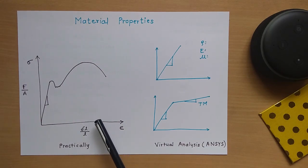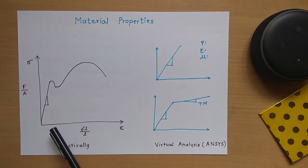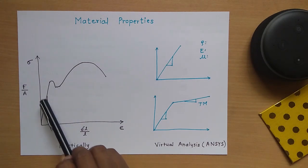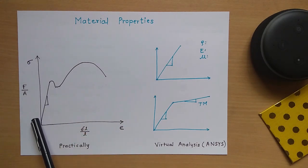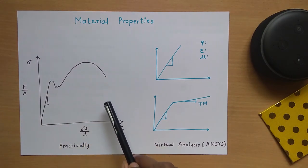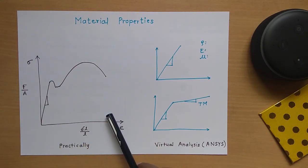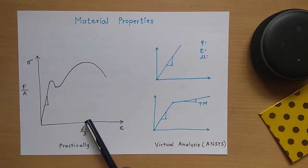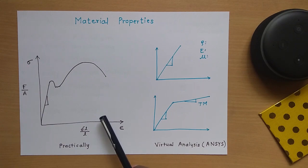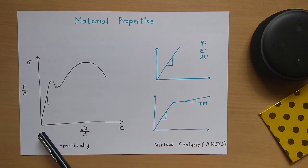Engineering materials are basically classified on the basis of the stress-strain curve — stress versus strain is plotted and we get some curve. This is the universal testing machine, which is used to calculate these graphs for each metal used in engineering applications.